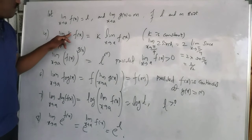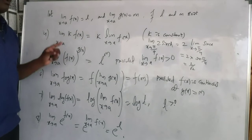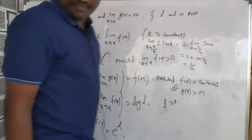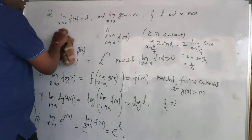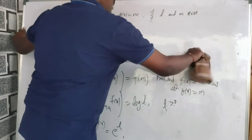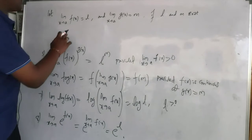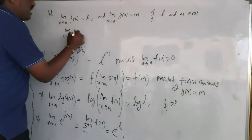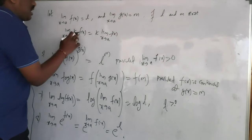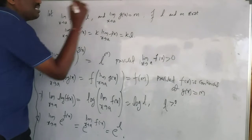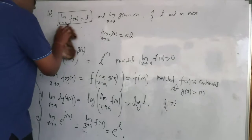So, what I want to tell you here is: whenever you have limit extending to a of k·f(x), the k will come out and you get k into limit extending to a of f(x), where k is a constant. We can write this as k·l, because limit extending to a of f(x) is given as l. So k·l will be the answer. This is the fourth property.